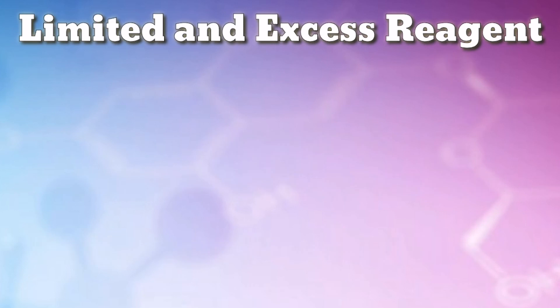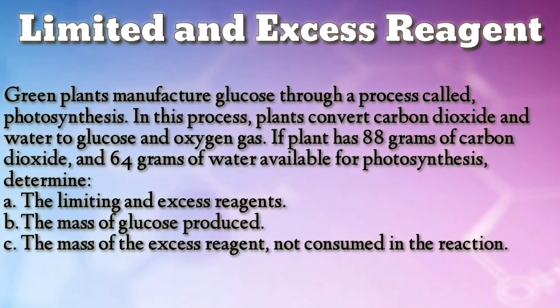Now it is your turn to answer. Green plants manufacture glucose through a process called photosynthesis. In this process, plants convert carbon dioxide and water to glucose and oxygen gas. If a plant has 88 grams of carbon dioxide and 64 grams of water available for photosynthesis, determine: (a) the limiting and excess reagents, (b) the mass of glucose produced, and (c) the mass of the excess reagent not consumed in the reaction.